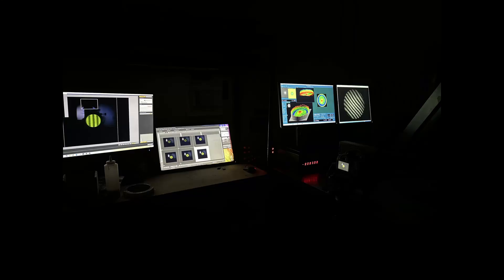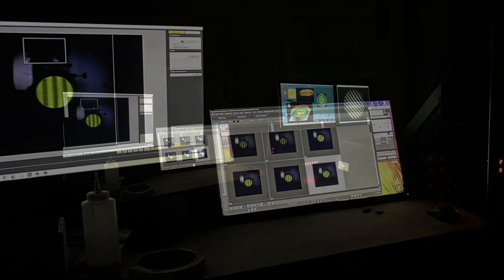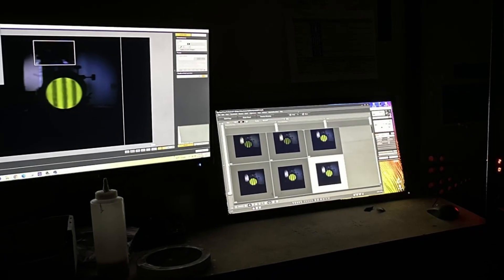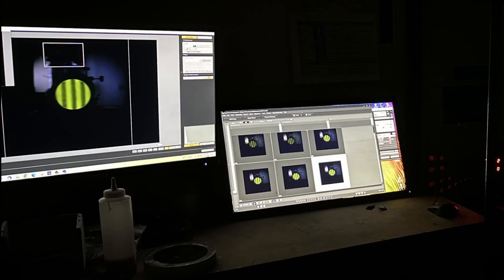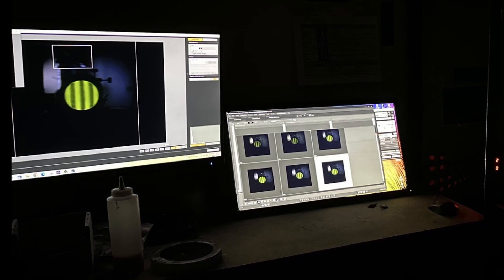We are going to be creating Ronchi bands. As with the fringes on the interferometer, the straighter the Ronchi bands, the better the spherical test. We are looking for lines that look similar to jail bars in green light.